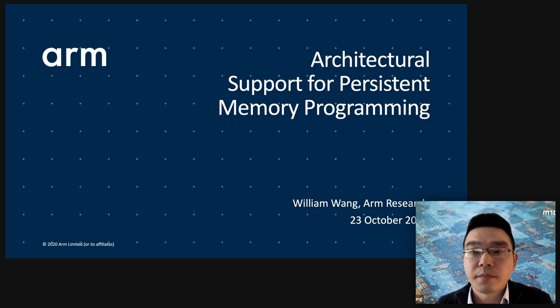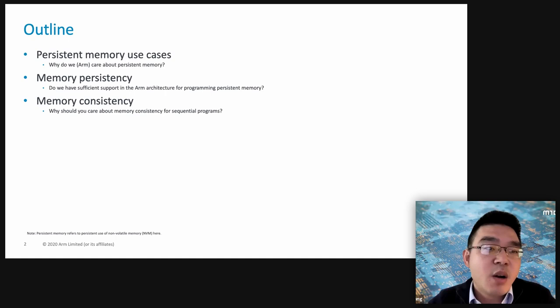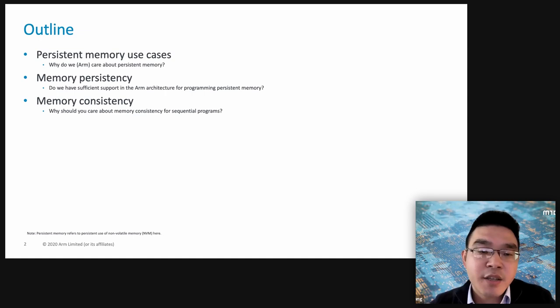Here's the outline of my talk. First, I will introduce why we actually care about persistent memory at ARM — the persistent memory use cases. Then I will talk about whether we have sufficient support in the ARM architecture for programming persistent memory. In the third part, I will talk about why you should care about memory consistency for sequential programmers.